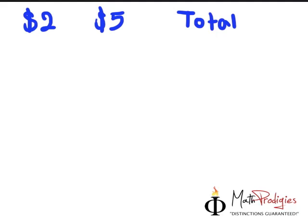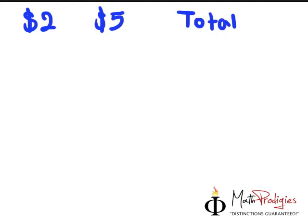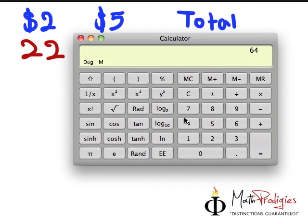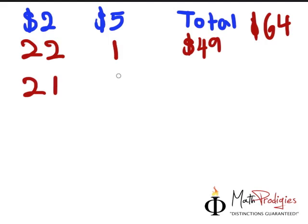For example, since they said we have 23 notes, it could be 22 notes here and one note here, because that gives me 23 notes. But how much is this worth? Remember, our goal is $64. So 22 times 2 gives you 44, plus $5 only gives you $49. How about if I have 21 $2-notes and 2 $5-notes? 21 times 2 gives me 42, plus 5 times 2 which is 10, gives you $52. We are still quite far away.